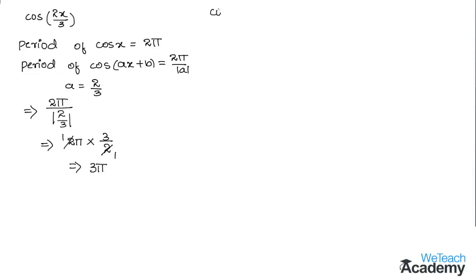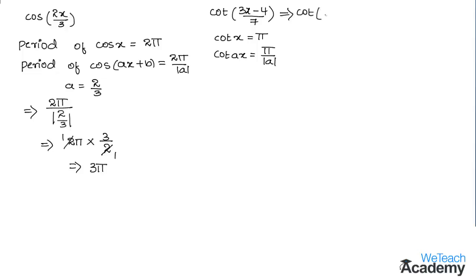Now let us find the period of the function cot((3x − 4)/7). The period of cot x is π, and the period of cot(ax) is π divided by |a|. We write the given function in the form of ax + b as cot(3x/7 − 4/7), which is in the form of cot(ax + b) with period π divided by |a|. Comparing, we get a equal to 3/7.